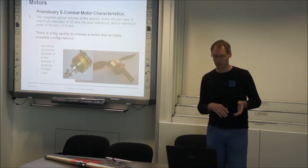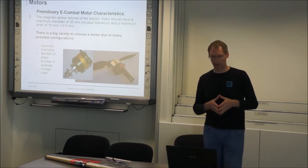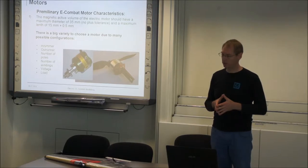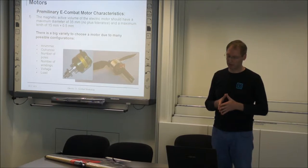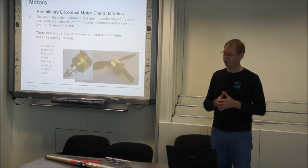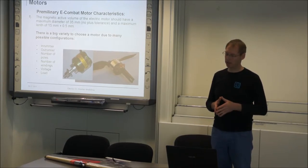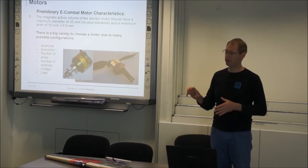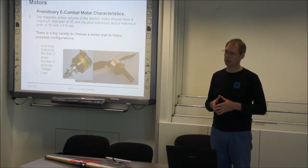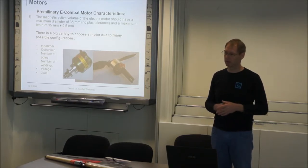Normally there is a big variety to choose the motor. There are inrunner, outrunners, the number of poles, number of windings, voltage and this propeller, the load of the motor. I think the outrunners has a big advantage that we can work without mechanical gear to reduce the RPM. The outrunner has higher torque to drive the probe direct and to limit the RPM and all the noise.